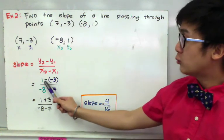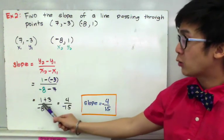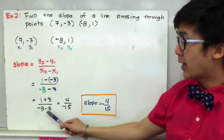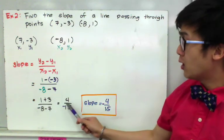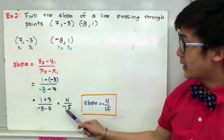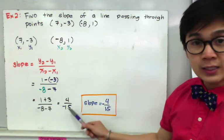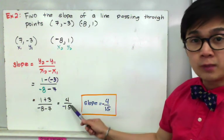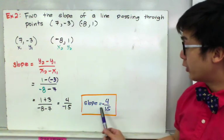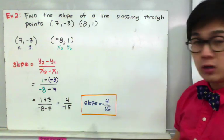And we know that 2 negatives in the middle makes a positive, so we'll end up with 1 plus 3 all over negative 8 minus 7, which gives us 4 all over negative 15. Since 4 over 15 is already in simplest form, our slope is therefore equal to negative 4 over 15.